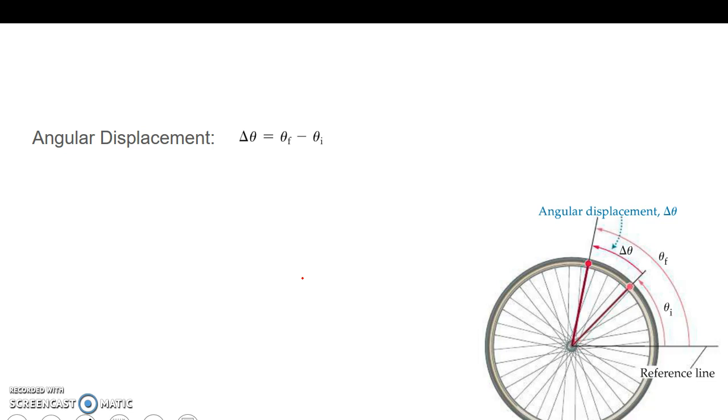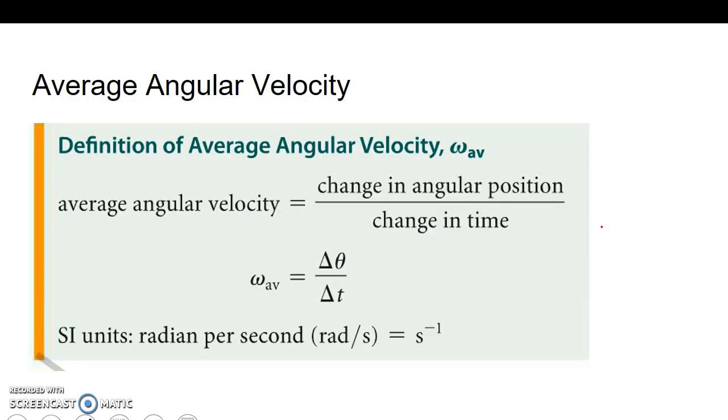How does this apply to physics? We talked about displacement way early in the start of the class. If we want to find change in displacement, we take our final displacement minus our initial displacement. If we talk about angular displacement, it's the same idea. We take our final displacement minus our initial displacement, and that gives us our change in displacement. We take our angles and subtract them, and that's where we can get our change.